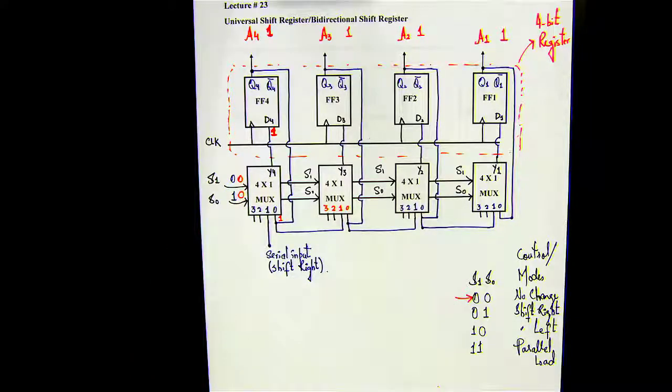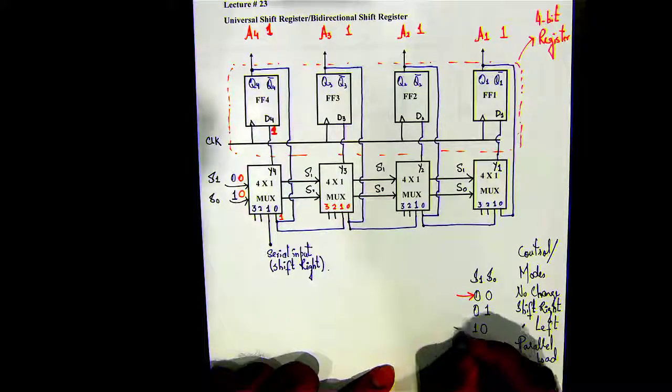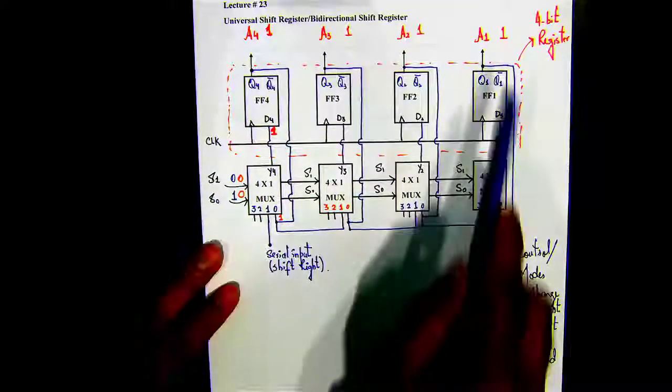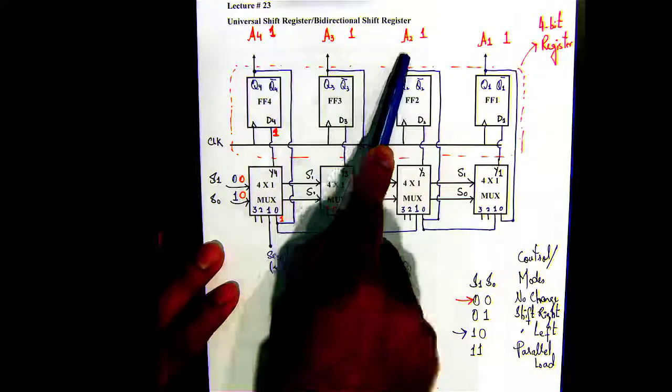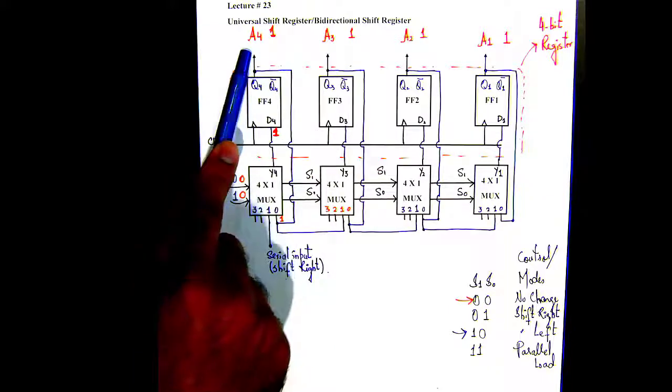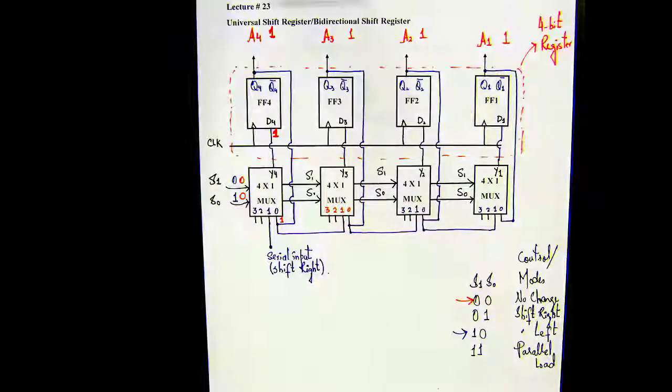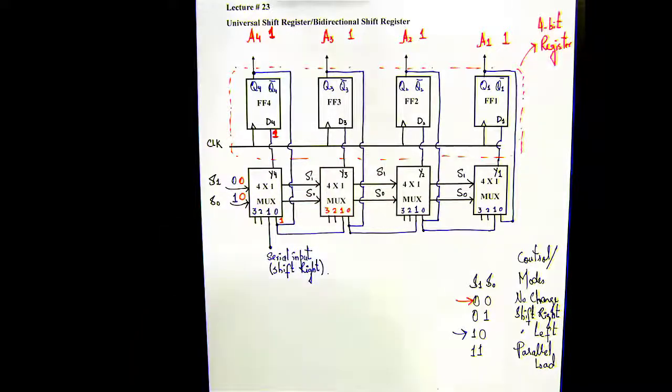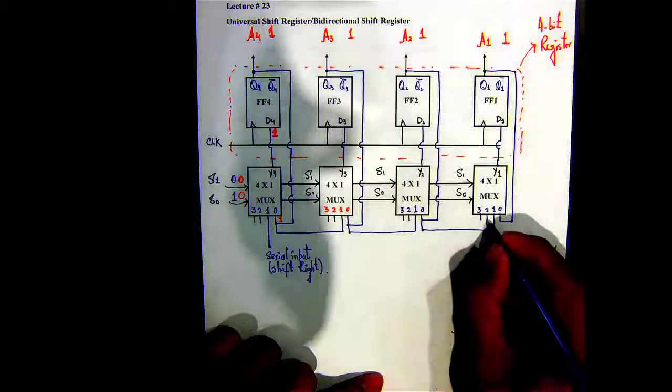Moving on to the third mode control, which is shift left, meaning A1 becomes A2, A2 becomes A3, A3 becomes A4, and then you will have a new output at A1. That will be the new serial input over here.